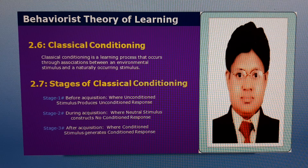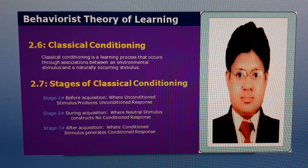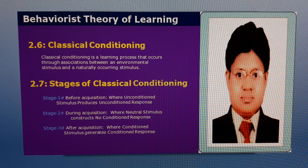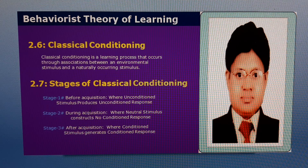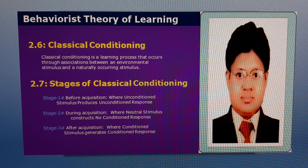There are three stages of classical conditioning. Stage one, before acquisition, where unconditioned stimulus produces unconditioned response. Stage two, during acquisition, where neutral stimulus constructs no conditioned response. Stage three, after acquisition, where conditioned stimulus generates conditioned response.